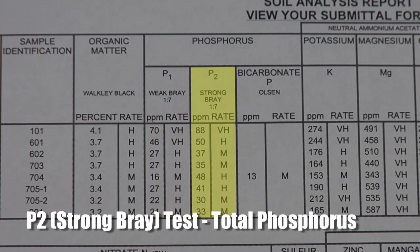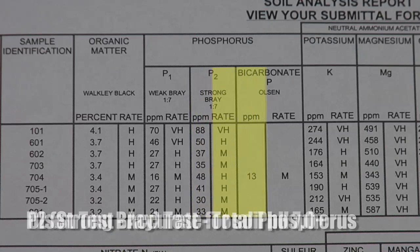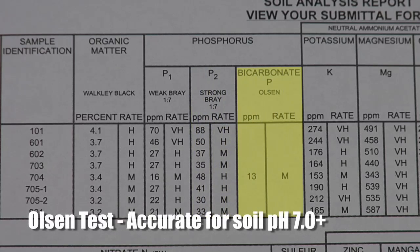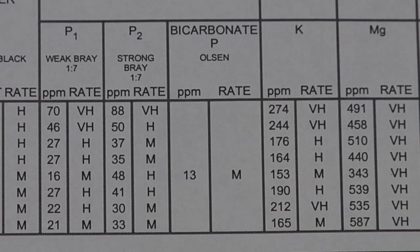The P2, or strong Bray test, tells you total phosphorus in the soil — what's available plus what's unavailable — and that's kind of nice to know what your total soil phosphorus is. The other test you may use for phosphorus is the Olsen test. We consider the Olsen test a more accurate measure of phosphorus that's going to be available if your soil pH is above 7. So if our pH is above 7 we like to look at that Olsen test to give us an idea of how much phosphorus is available.